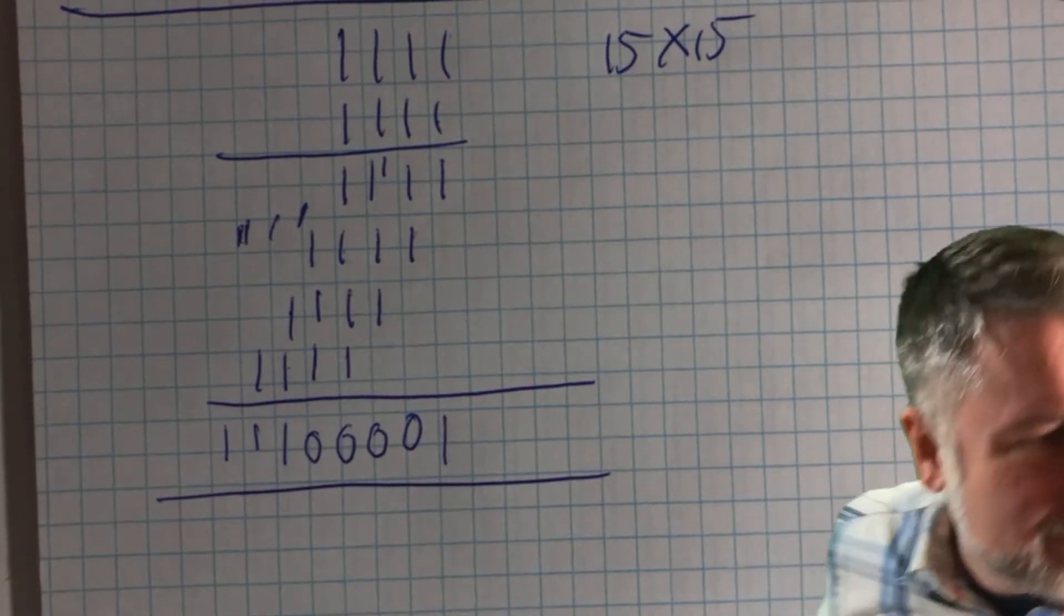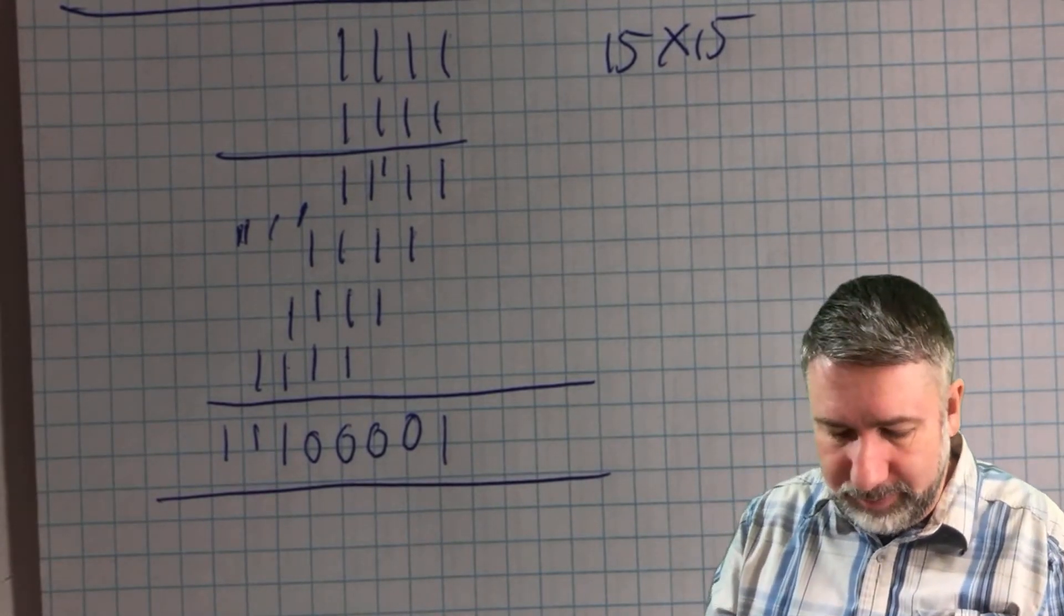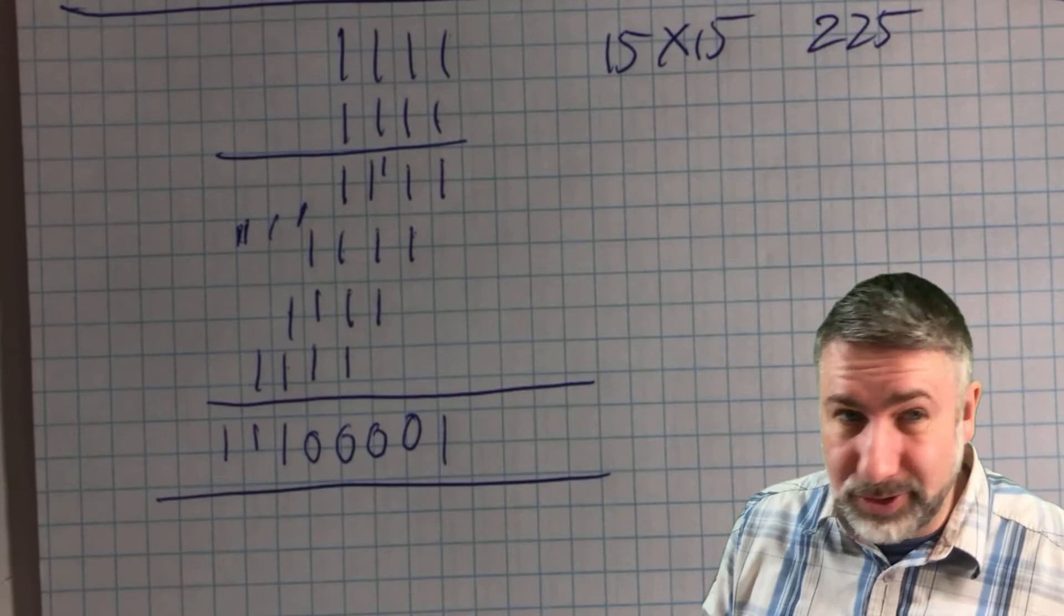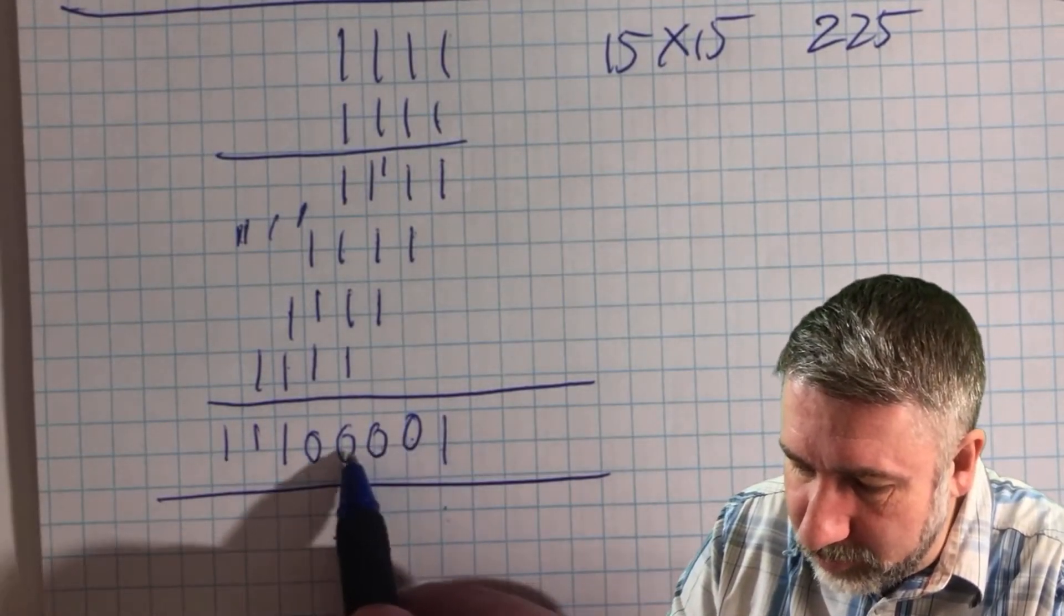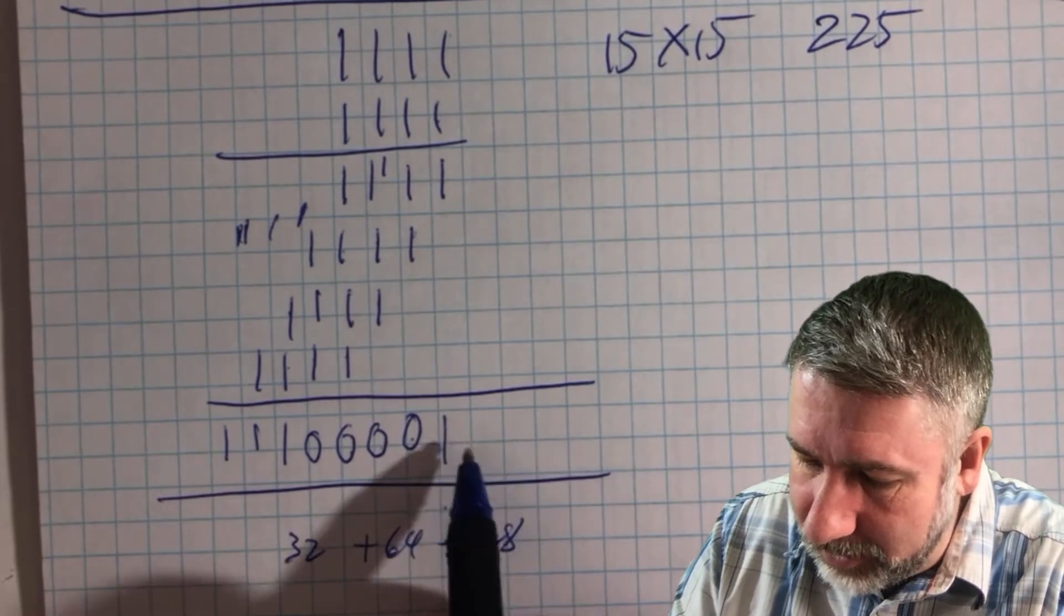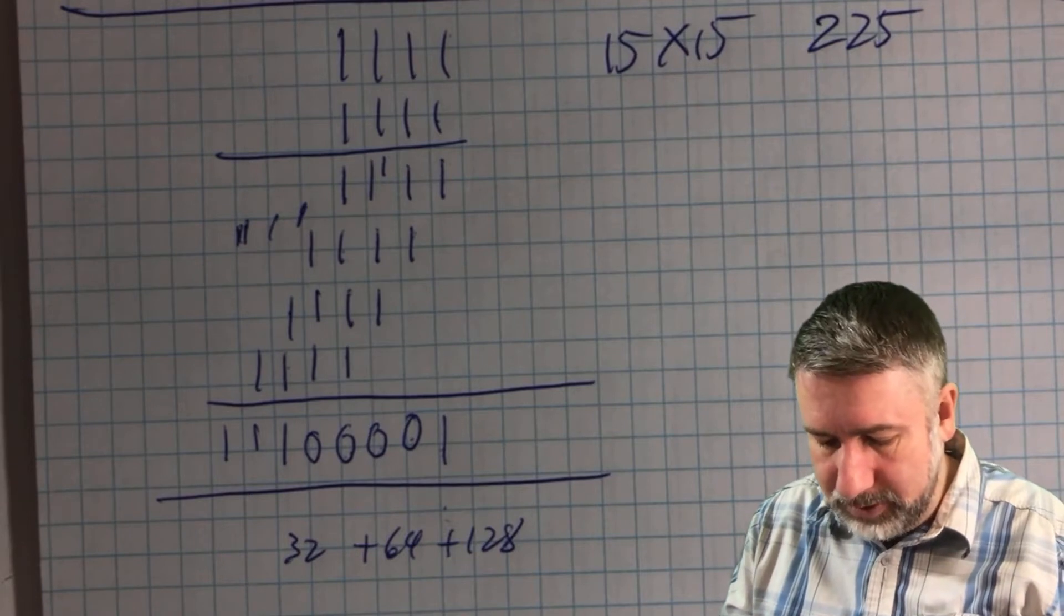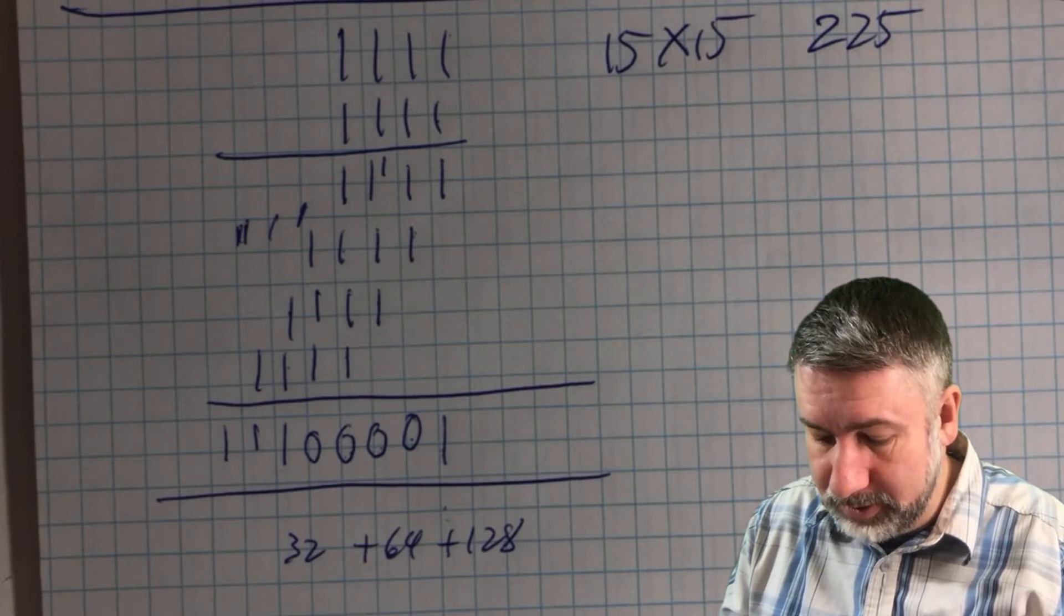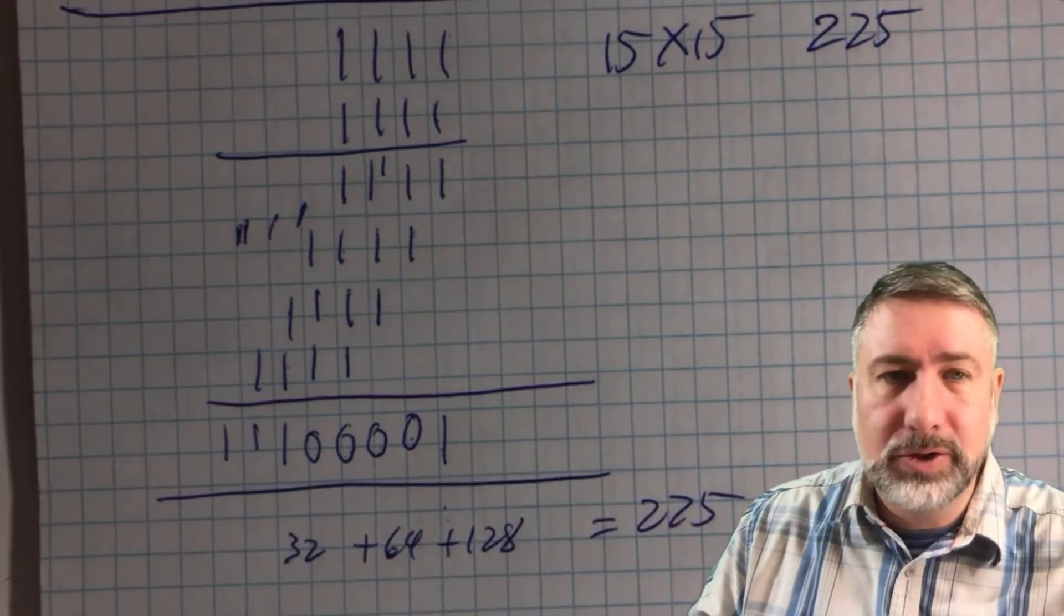And we should actually check and see if that's correct. So I don't off the top of my head know what 15 times 15 is. It's 225. And so is this number 225? Well this is one plus, so this is one, two, four, eight, 16, 32 plus 64 plus 128, right? And what this is, 128 plus 64 plus 32 plus one is in fact 225. So we've got the right answer, which is great. Always good to double check.